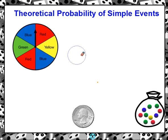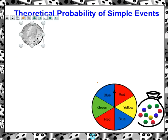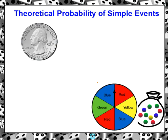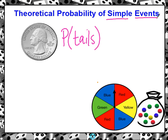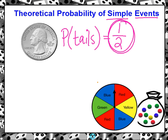Last example — we'll move to the coin. The probability of the coin landing on tails. We're flipping the coin one time, so it's still a simple event. If we move to flipping the coin more than once, that's when it becomes a compound event. The probability of flipping the coin and it landing on tails: one side is tails out of two total sides, so the probability would be one out of two.